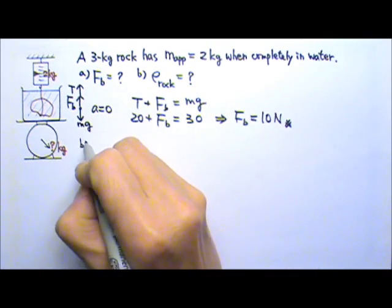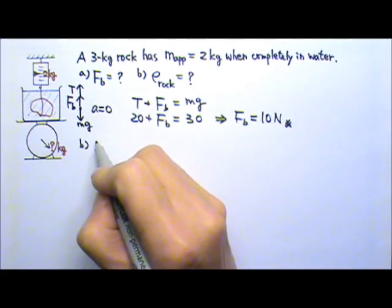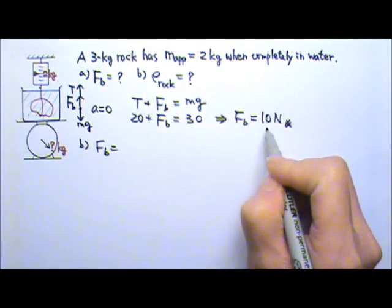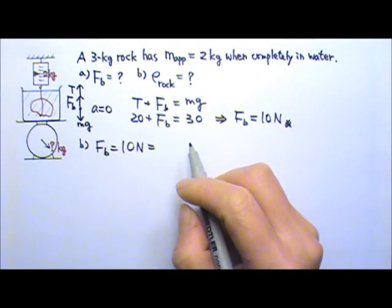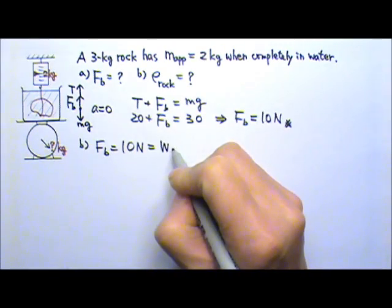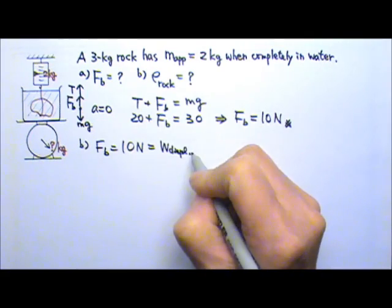Now let's look at part B. We know that the buoyant force is 10 N. And according to the Archimedes principle, the buoyant force is the weight of the displaced fluid.